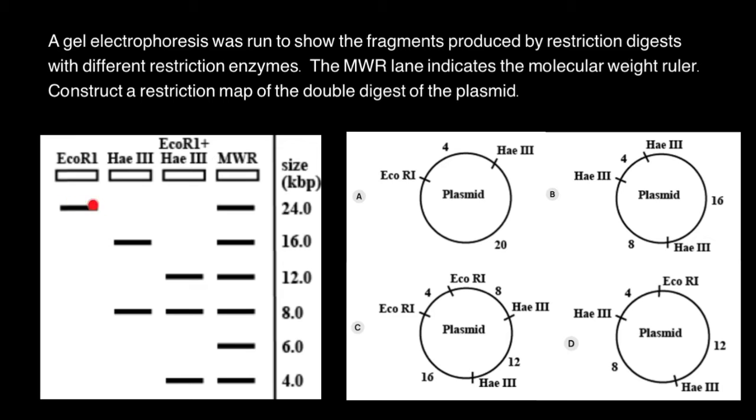And the length of this band represents the length of the plasmid. Now, we know that plasmid is 24,000 base pairs.